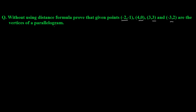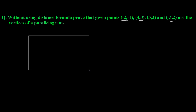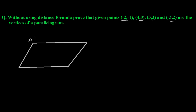Let's make a rough figure. This is point A which is (-2, -1), this is point B which is (4, 0), this is point C which is (3, 3), and this is point D which is (-3, 2).